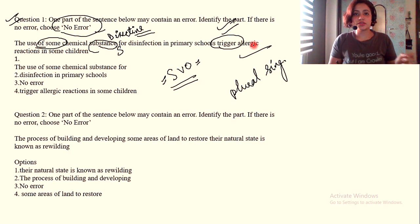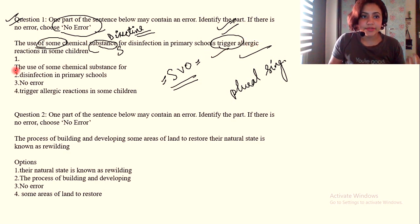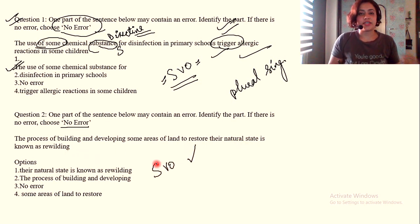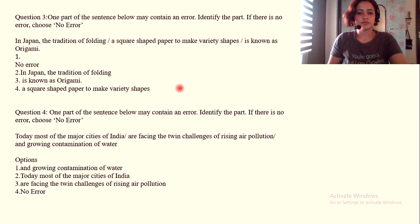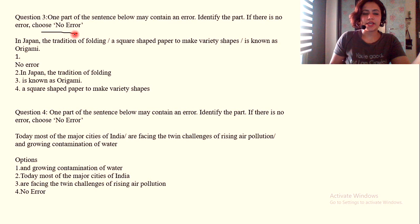Number two: The process of building and developing some areas of land to restore the natural state is known as rewilding. SVU is completely fine, no errors at all. So we go with no error.